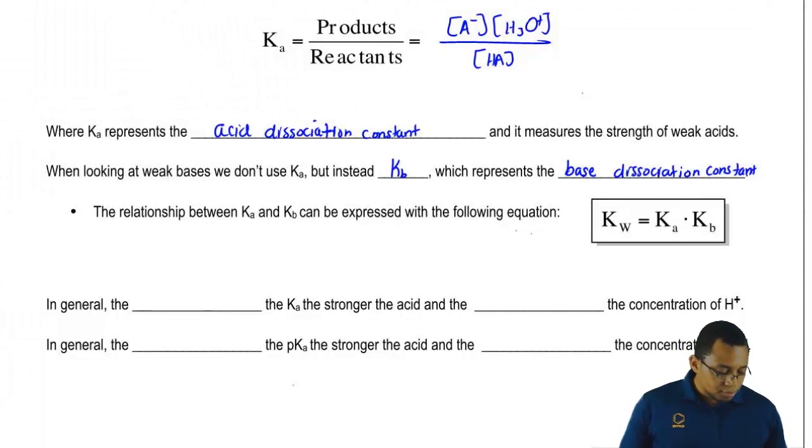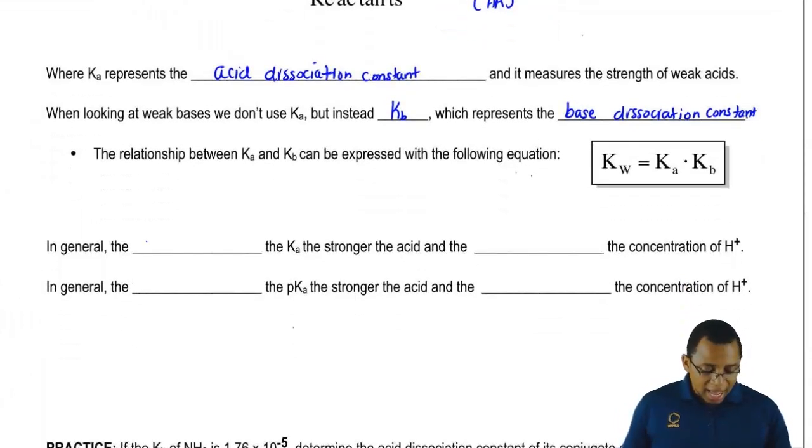We're going to say in general, the higher the Ka value, then the stronger the acid. The stronger the acid, the greater the concentration of H+.